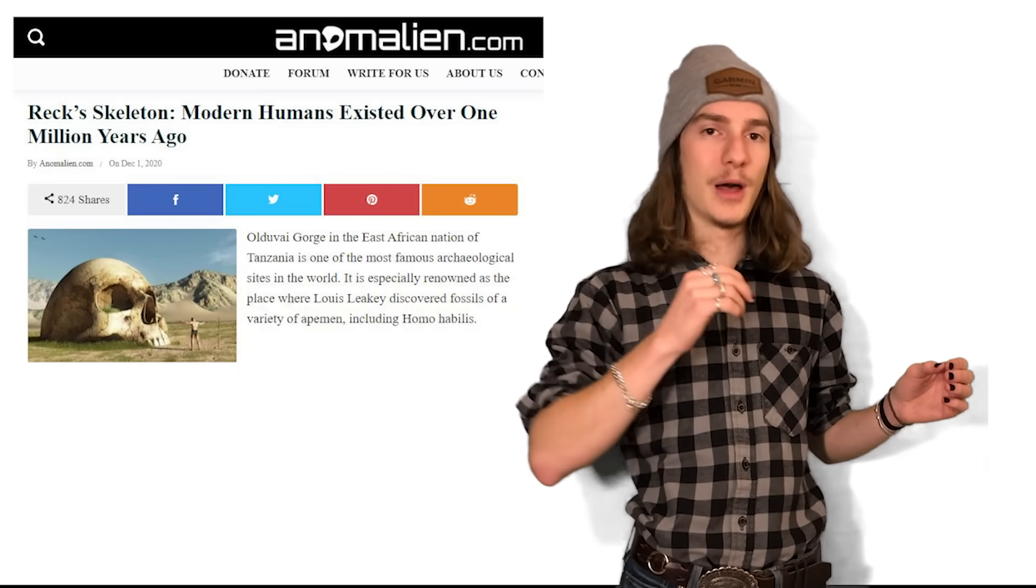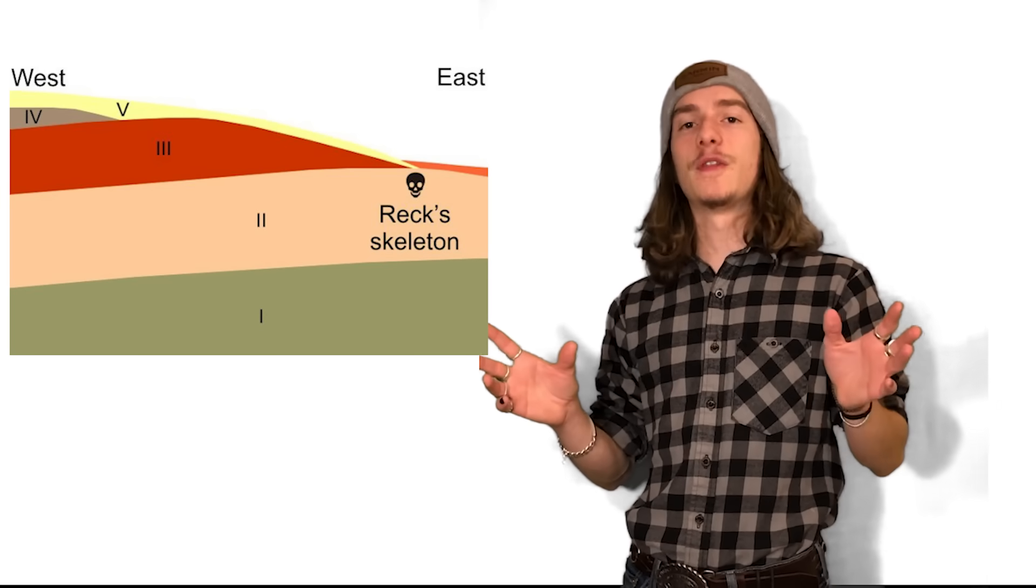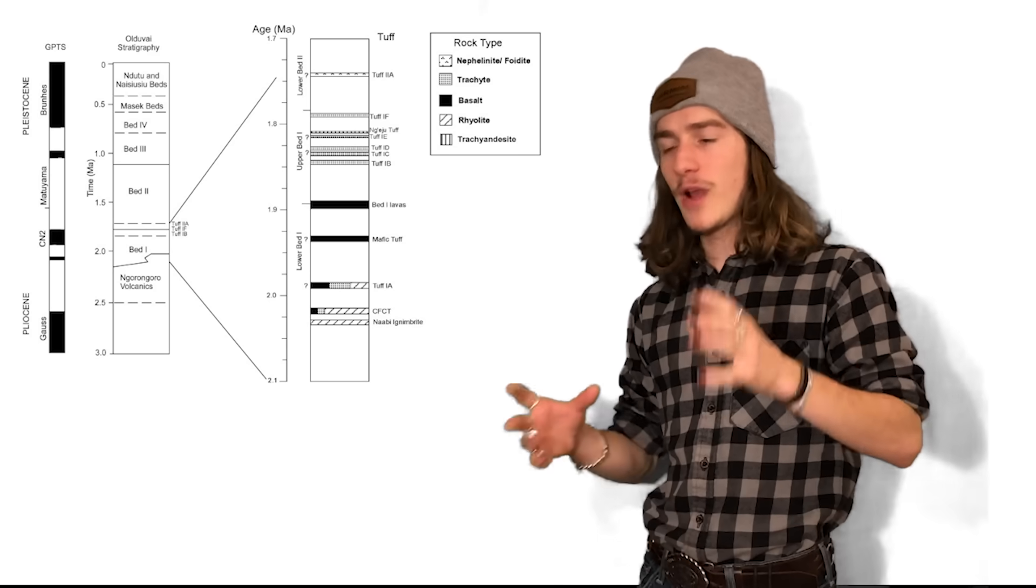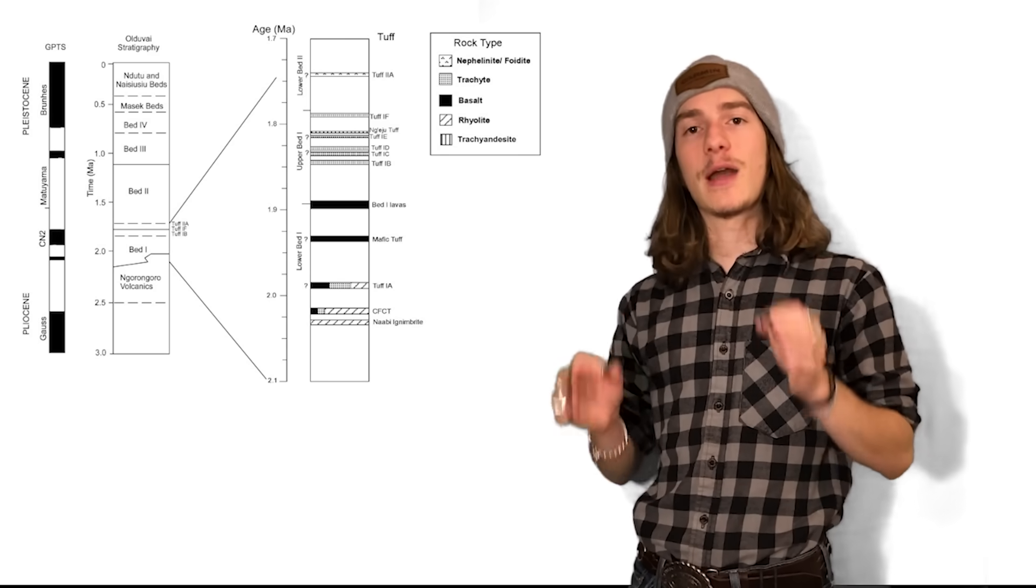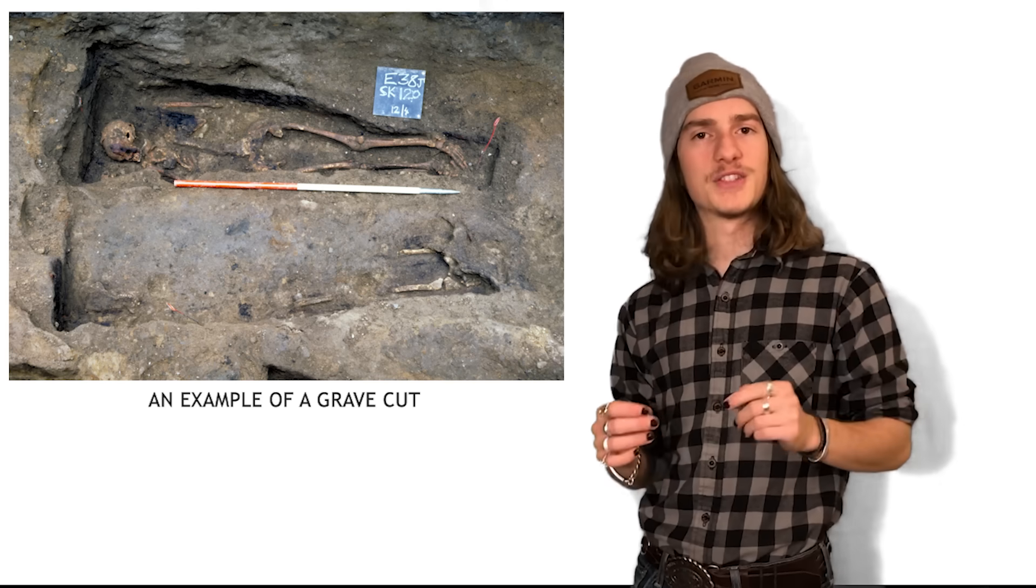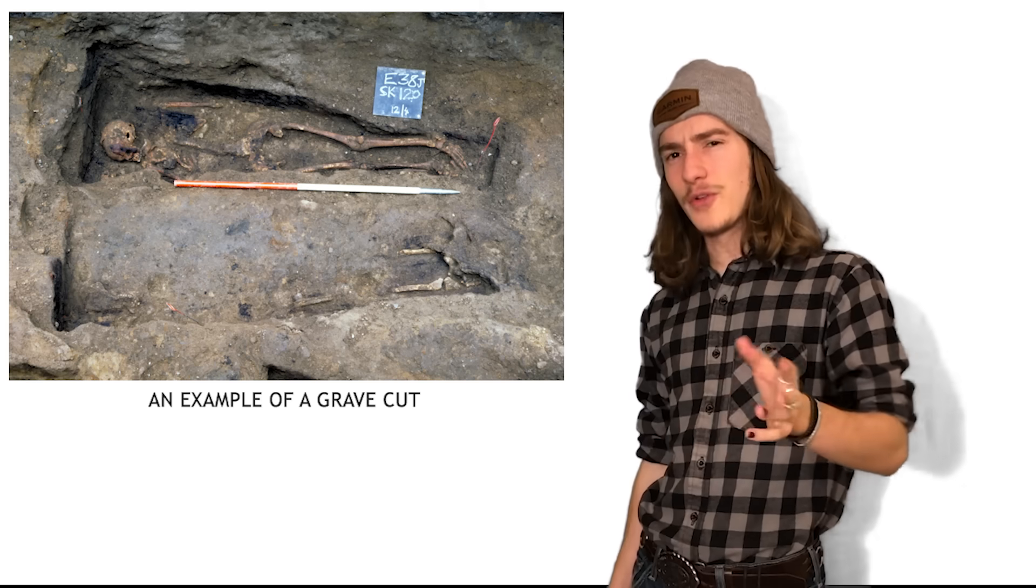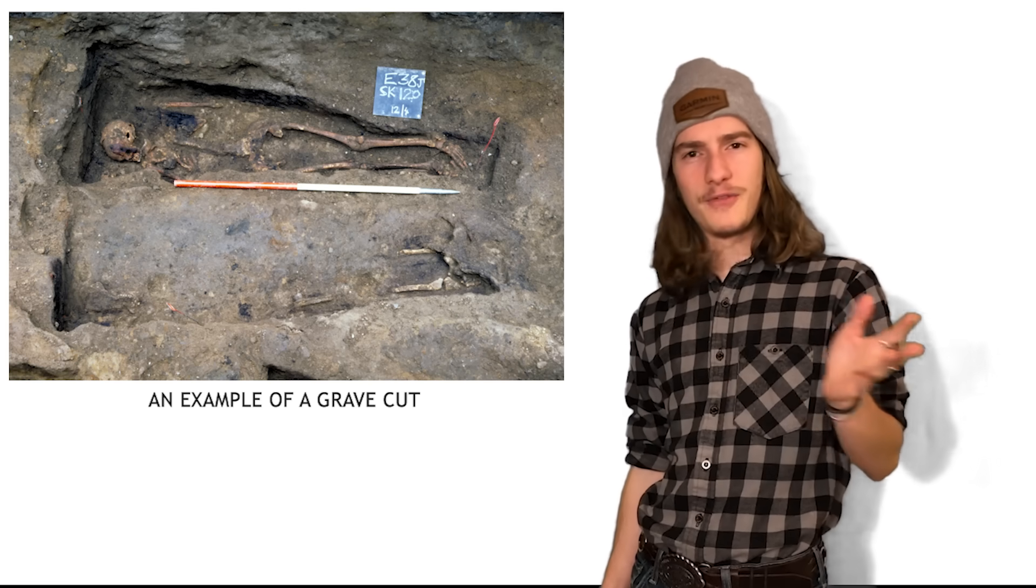And this discovery led some to believe that what Reck had found was an example of a Pleistocene homo sapien. Reck, however, was a man of science and he knew that this was very unlikely. And so Reck began to work tirelessly to figure out why this skeleton had been found at this depositional layer. He assumed that it must have been an intentional burial and therefore set about to look for a grave cut. However, and much to his dismay, he did not find one.